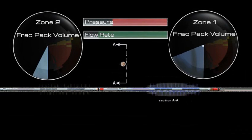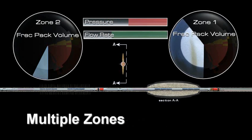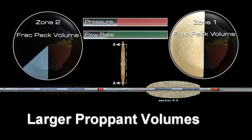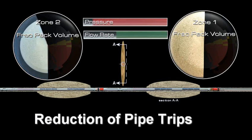The ESTMZ system provides the ability to frack pack multiple zones at higher pump rates and larger proppant volumes, with a significant reduction in the number of pipe trips.